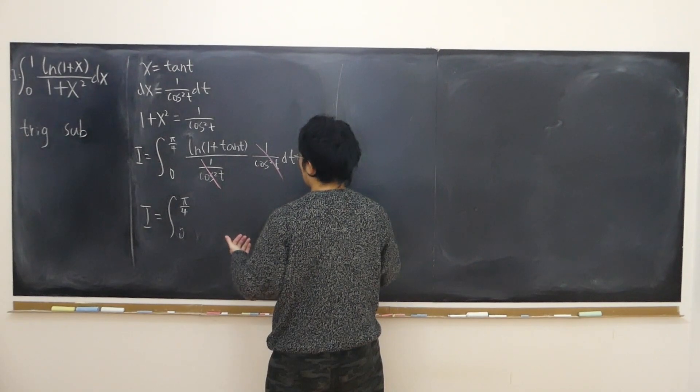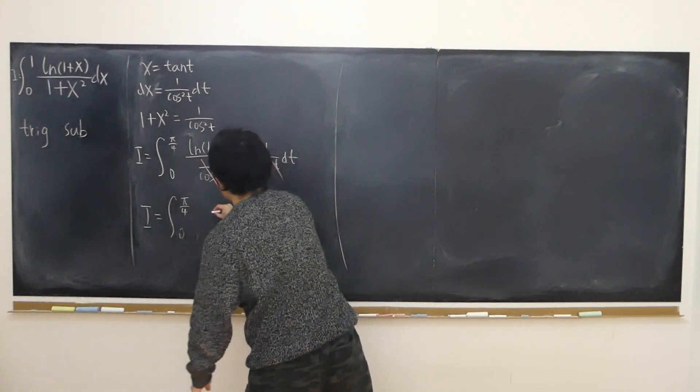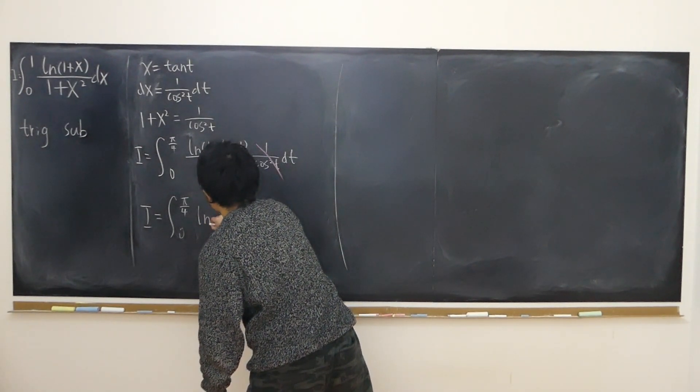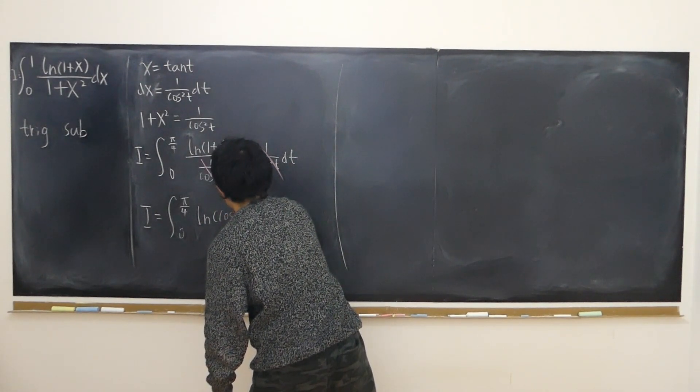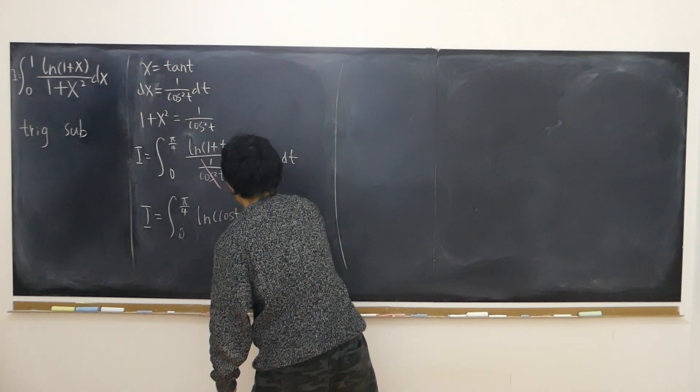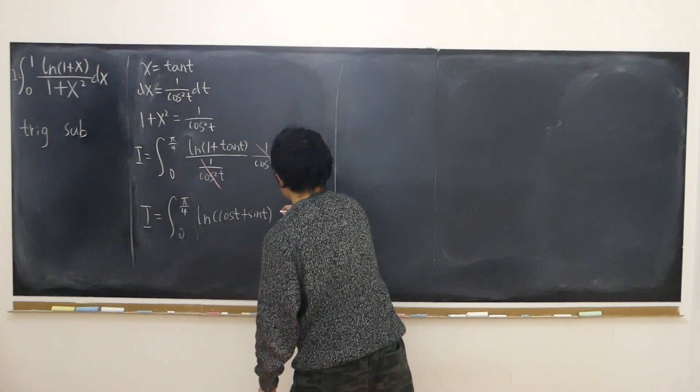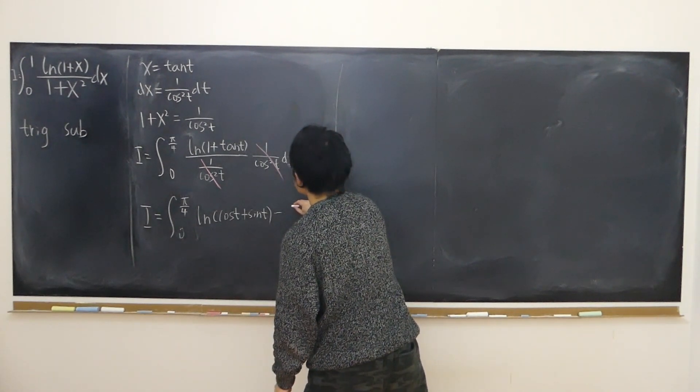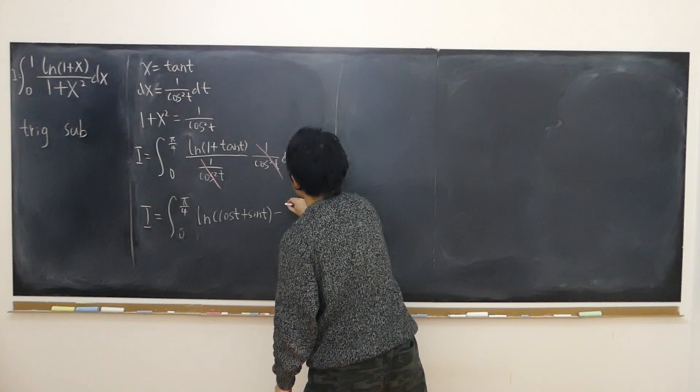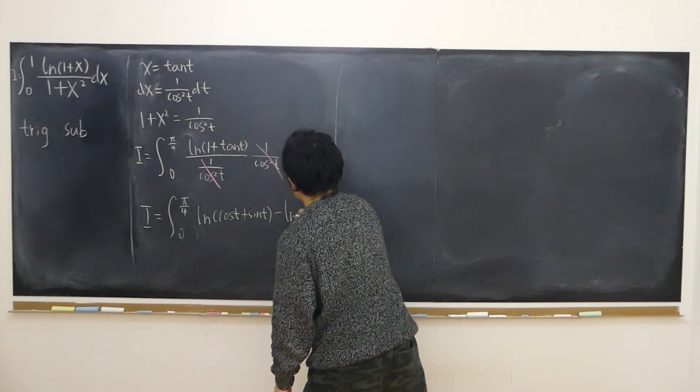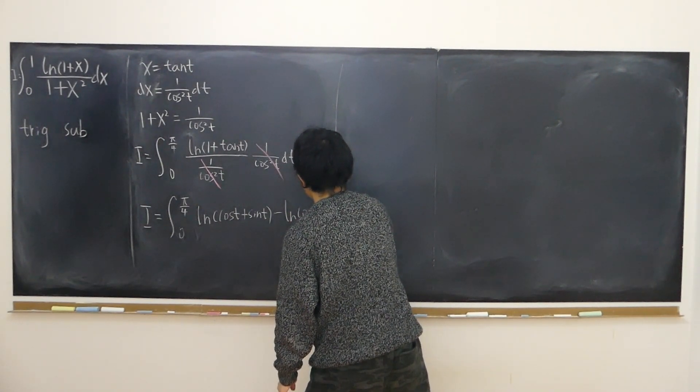And using logarithm rule, difference of logarithm, that is equal to log of cosine plus sine minus log of cosine dt.